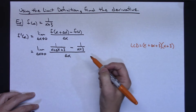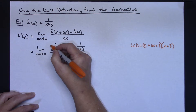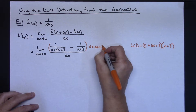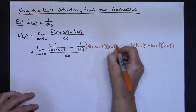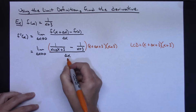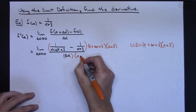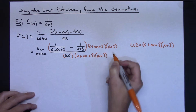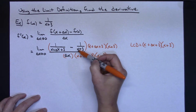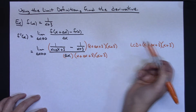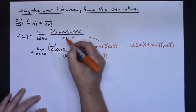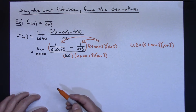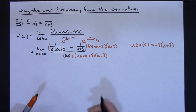I'm going to multiply both the numerator and the denominator by that least common denominator — x plus delta x plus 3, times x plus 3. The reason for doing this is to eliminate those two fractions. By distributing the least common denominator to each term, I can cancel and eliminate the inner fractions.